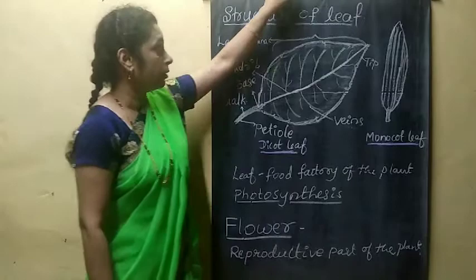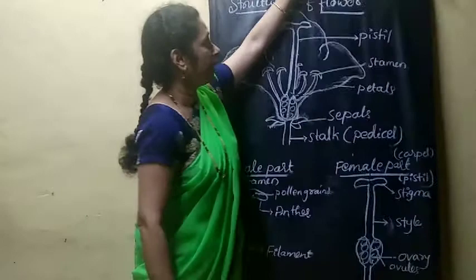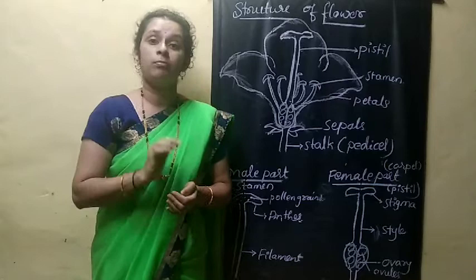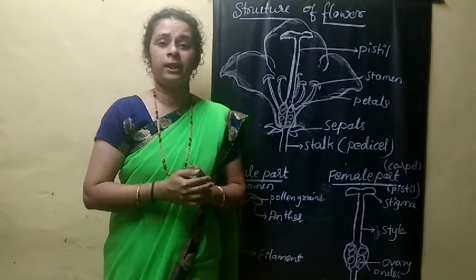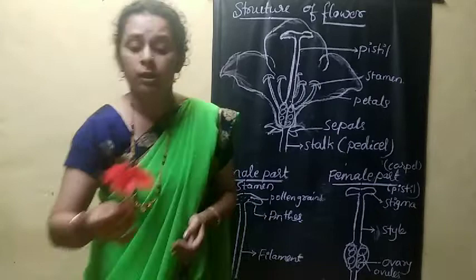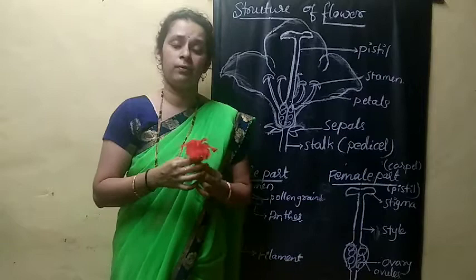I think you all have done the diagram of leaves as well as flowers. I have also sent a video on how to draw the diagram of a flower and leaves easily. You can draw in any method, but you have to show all the parts. Now I will consider this hibiscus flower as a model flower for dissection.